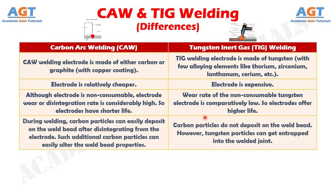Number 4: During welding, carbon particles can easily deposit on the weld bead after disintegrating from the electrode in carbon arc welding. Such additional carbon particles can easily alter the weld bead properties. Whereas carbon particles do not deposit on the weld bead in TIG welding; however, tungsten particles can get entrapped into the welded joint.